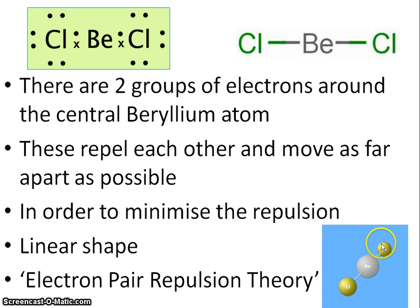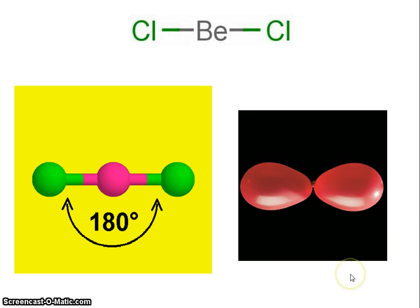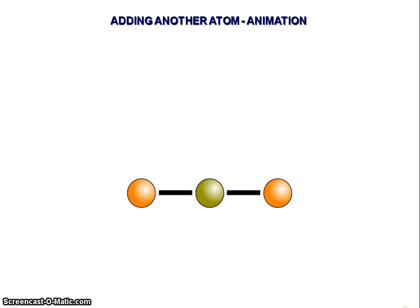That gives us a linear shape based on the electron pair repulsion theory. This linear shape is simply where you've got three atoms in a row, and the bond angle is 180 degrees for any linear molecule.